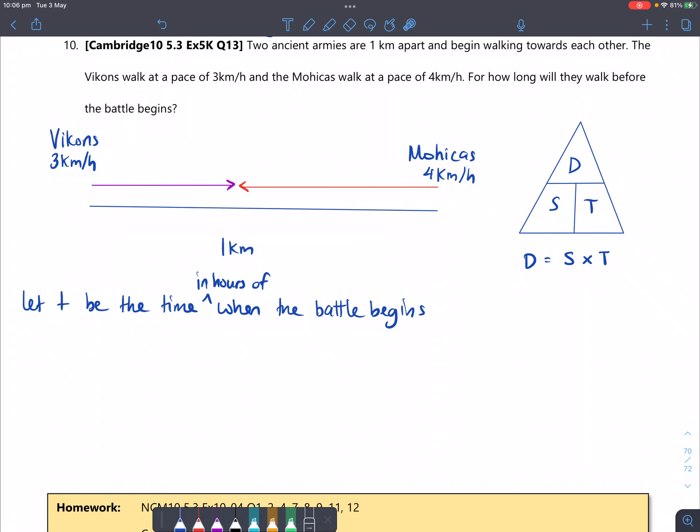So if I let T be that time in hours, then the distance here traveled will become 3T, which is the distance, sorry, the speed, Vikons, times the time.